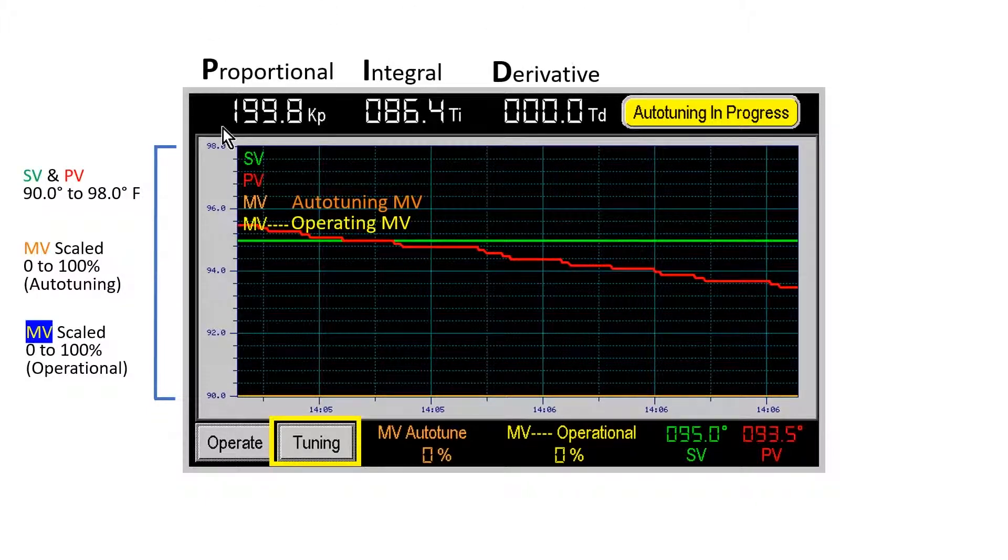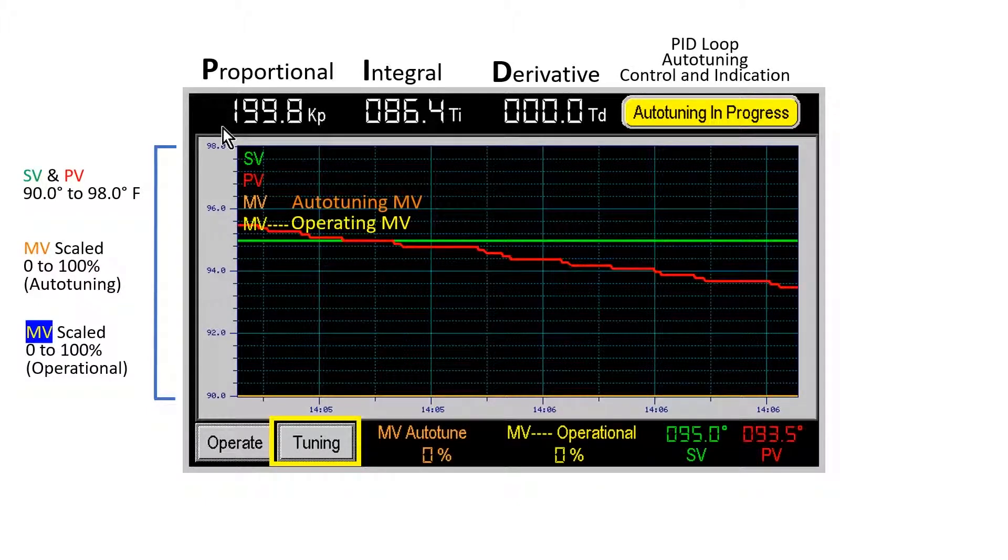The proportional, integral and derivative values are entered and displayed here. The auto-tuning control button is visible when the PID loop is in the off mode.